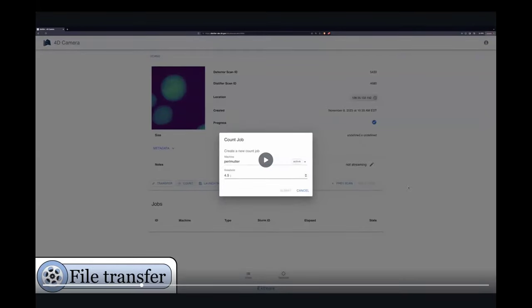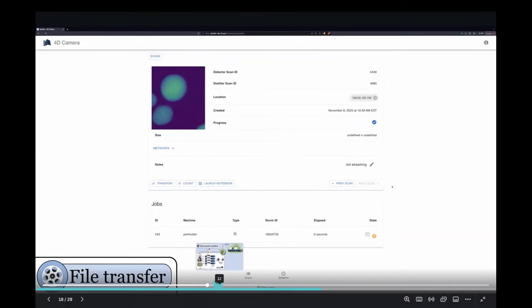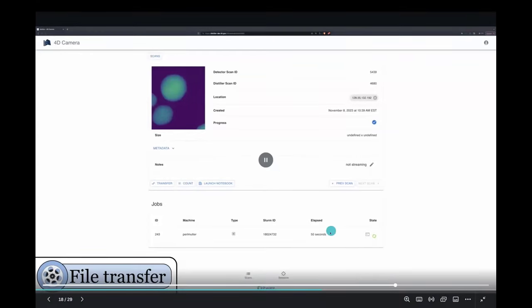And then once they have acquired this scan, they can press this count button. That's going to move their data over and they can change some parameters in here, like the threshold level. They submit that. And this uses the super facility API again to start up a job and you can see that it's been given a Slurm ID and they can kind of track the progress of this as it moves forward. Yeah, so you can see that its state is now active and it's being processed.